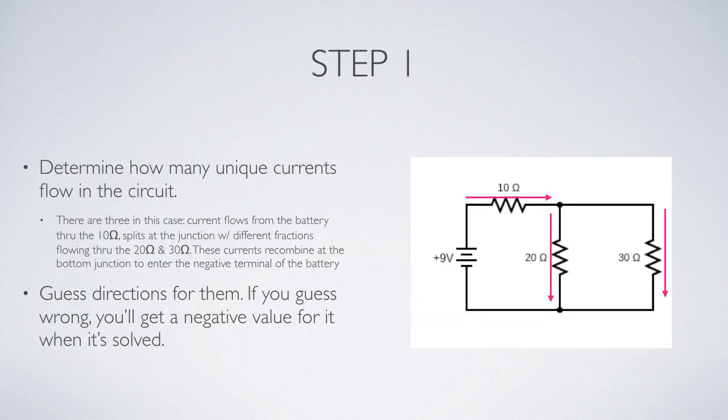So the first step is to analyze the circuit and find out how many independent currents are flowing in the circuit. We have to be careful because when things are in series, the same current flows through them. I don't want to say there's a different current through the battery and the 10-ohm resistor because they're connected together directly in series.